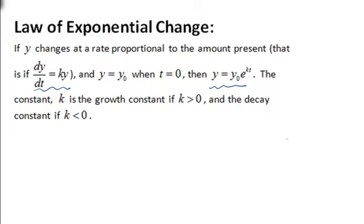So what the law of exponential change says is that if y changes at a rate proportional to the amount present, that is, if dy/dt equals ky and y equals y sub 0 when time equals 0, so this is your initial amount, then you're going to get the equation y equals y sub 0 times the quantity e to the kt. The constant k is the growth constant if k is greater than 0 and the decay constant if k is less than 0.